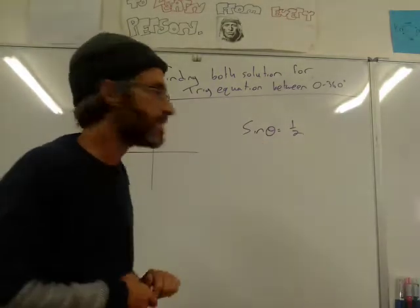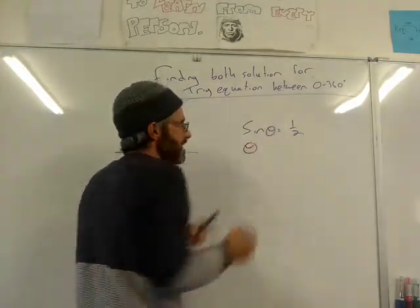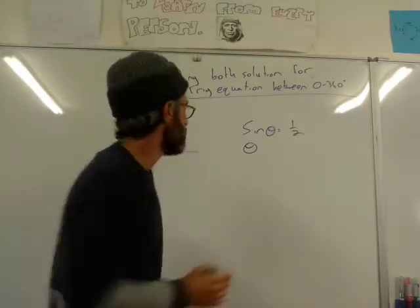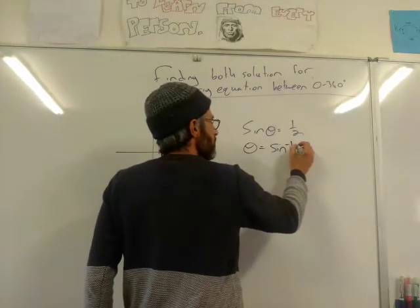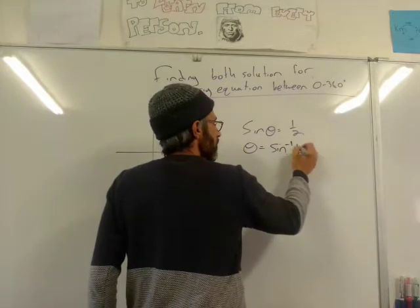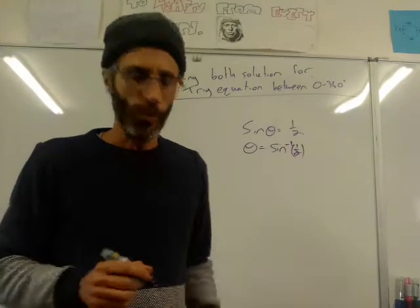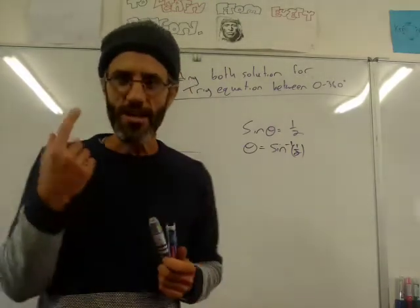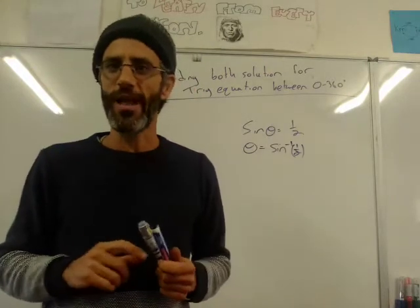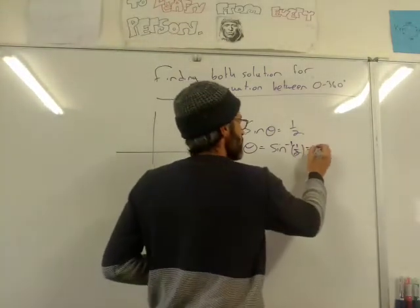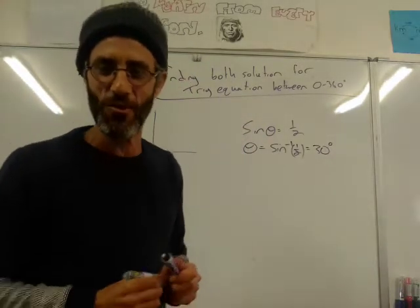Now, how do we find that? What you would do is say sine of the angle theta is half. Then to find the angle, all we're going to do is sine-minus-one of a half. We put that into the calculator — shift sine. But in this case, we don't even need to do that, because we need to remember that one-half belongs to a special angle, and that angle is 30 degrees. So we don't, in theory, need the calculator if you remember that.